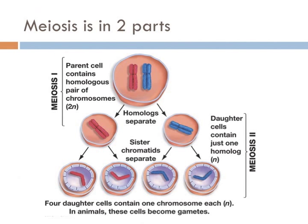Meiosis has two main parts, known as meiosis I and meiosis II. In meiosis I, the homologous pairs separate from each other — one homologous pair goes into one daughter cell, and another goes into the other. The homologous pair from the organism's mother is shown in red, whereas the pair from the father is colored blue. The end result of meiosis I is that the two daughter cells have one type of chromosome, not two.